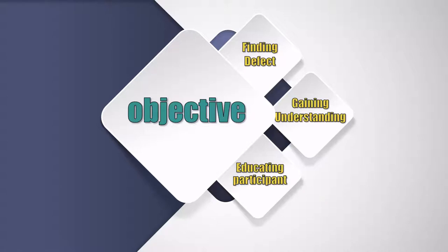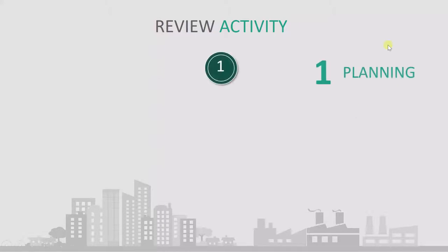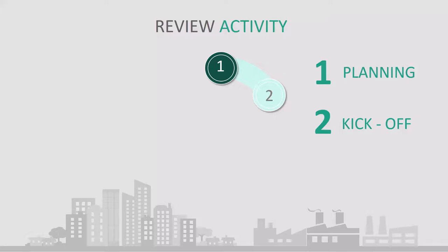Now let's look at the review activities. There are different activities in a review, and what you need to understand is the order in which they are performed. The first activity is planning — how the review will be done, who will be the reviewer, and which document has to be reviewed. Once planning is done, you move to the second activity: kick-off. Here you may have a small meeting where you decide what documents are required and start the review process.